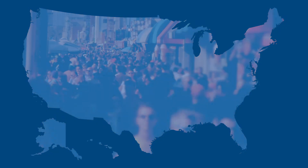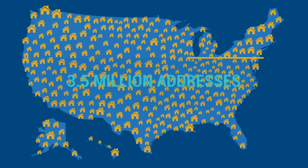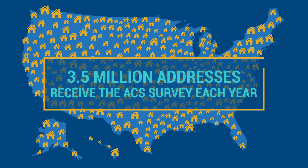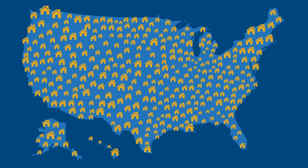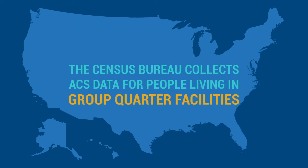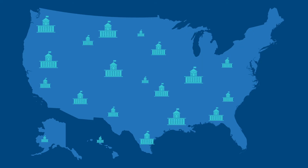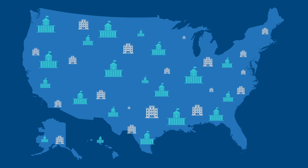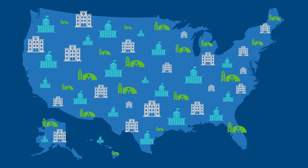The ACS is an ongoing survey sent to a representative sample of 3.5 million addresses per year, with survey information collected nearly every day of the year. In addition to collecting information about households, the Census Bureau also collects ACS data for people living in group quarter facilities, such as college dorms, prisons, and military barracks.